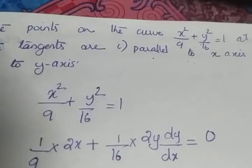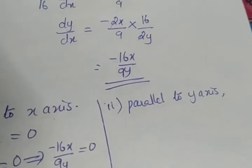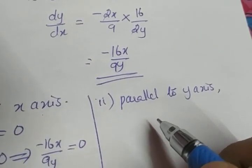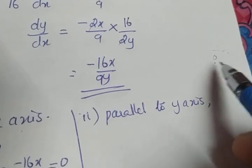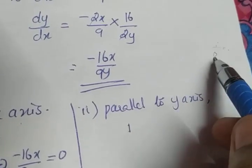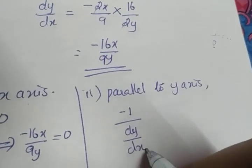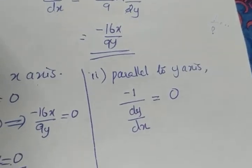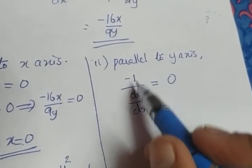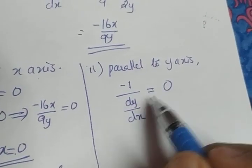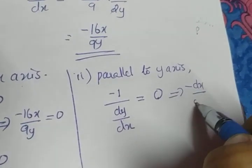The second part: parallel to the y-axis. When a line is parallel to the y-axis, the slope is not defined. So we consider the slope of the normal instead: −1/(dy/dx) = 0. Rather than cross-multiplying, rewrite −1/(dy/dx) as −dx/dy = 0, giving dx/dy = 0.